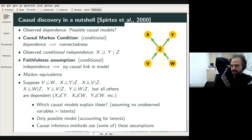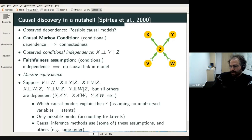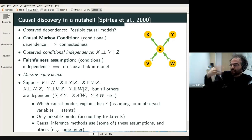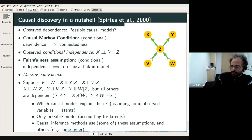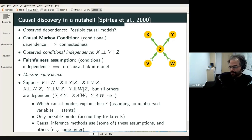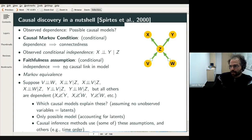If you have time order, as in climate and many other fields, you can additionally use it — because causal effects can only go forward in time. Therefore, you can often orient many more links in the time series case. This is an important example that gives the basic intuition of causal discovery in a nutshell.